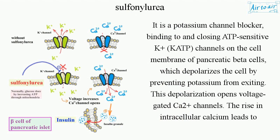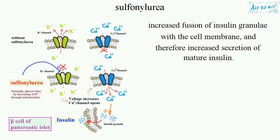It is a potassium channel blocker, binding to and closing ATP-sensitive K+ channels on the cell membrane of pancreatic beta cells, which depolarizes the cell by preventing potassium from exiting. This depolarization opens voltage-gated Ca2+ channels. The rise in intracellular calcium leads to increased fusion of insulin granules with the cell membrane and therefore increased secretion of mature insulin.